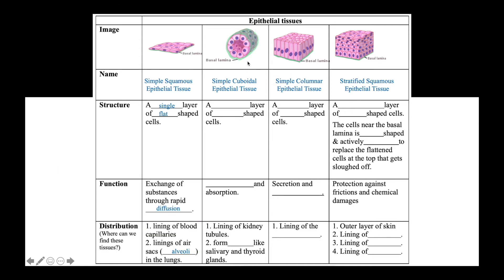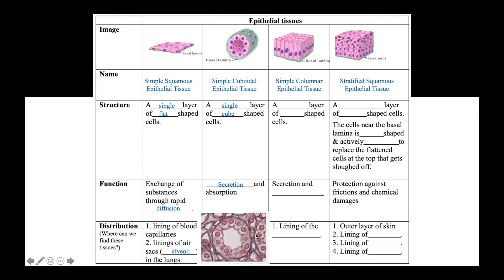Simple cuboidal epithelial tissue is made up of a single layer of cube-shaped cells. It is perfect for secretion and absorption, and can be commonly found lining kidney tubules and forming various glands such as the salivary glands and the thyroid gland.